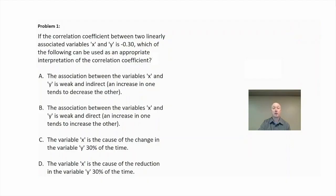Problem one: if the correlation coefficient between two linearly associated variables x and y is negative 0.30, which of the following can be used as an appropriate interpretation of the correlation coefficient? What is the correlation coefficient? The correlation coefficient tells me how closely related the variables x and y are. So if we had a scatter plot of some data values...